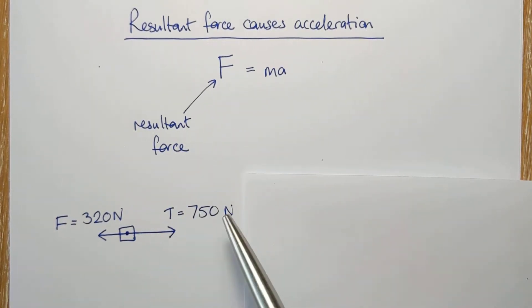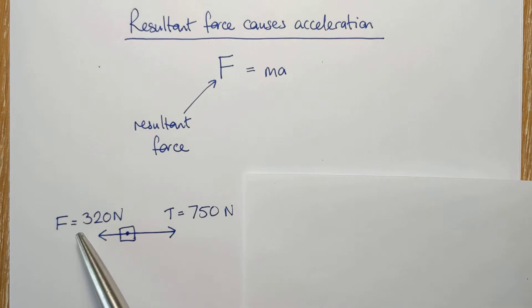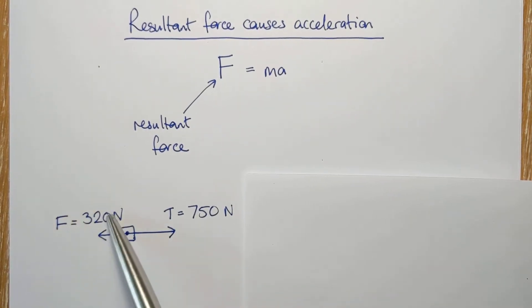This one here, I'm imagining a car, and this is the forward thrust force from the engine, due to the engine, and then this is the total resistive force backwards. So air resistance, friction, add it all together, that's the total resistive force backwards. I've also got a weight and a normal contact force. I've left them off because they're going to be cancelling out. In my question, this car is driving along the road.